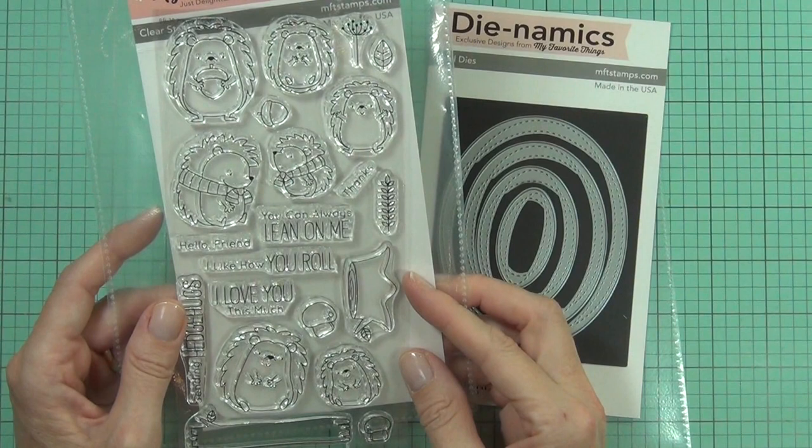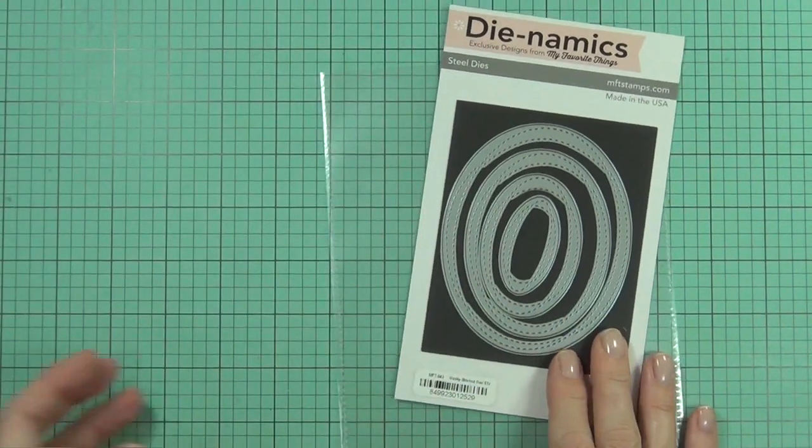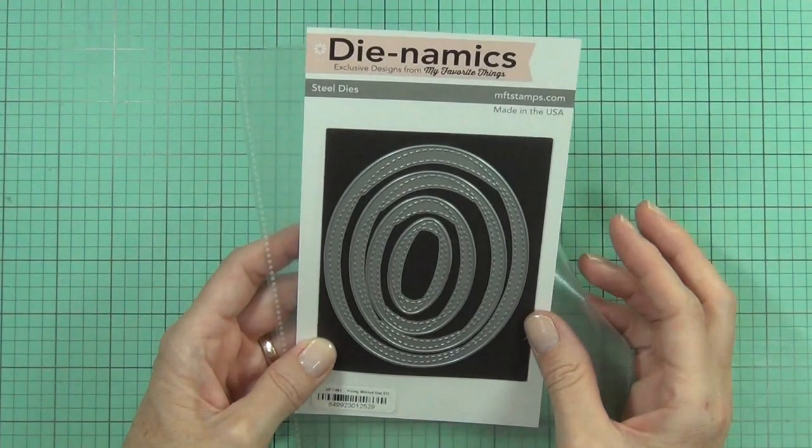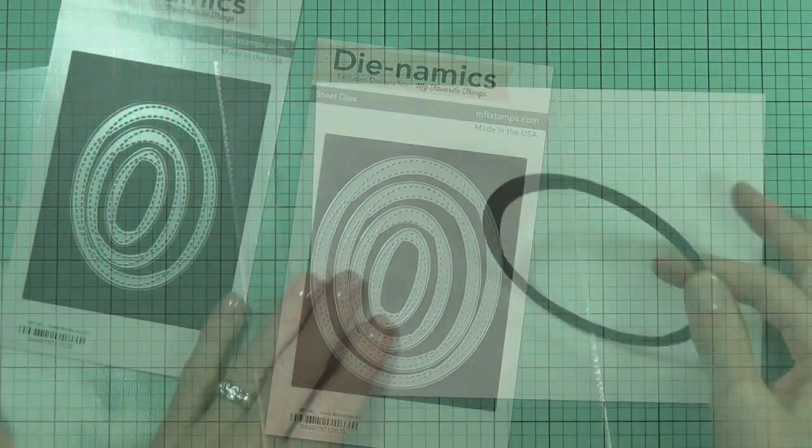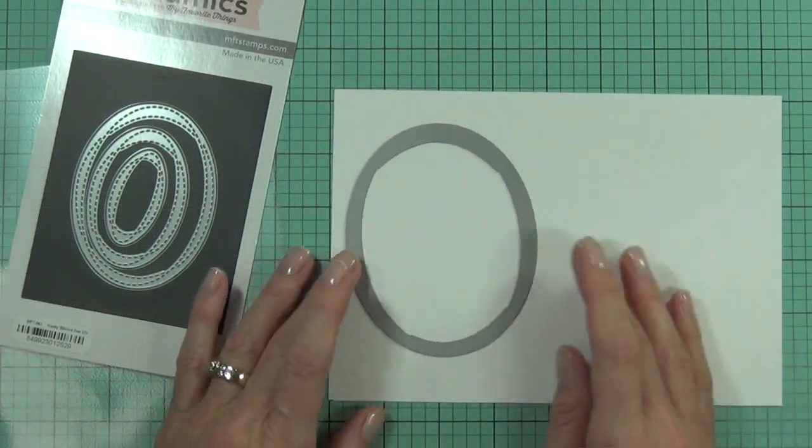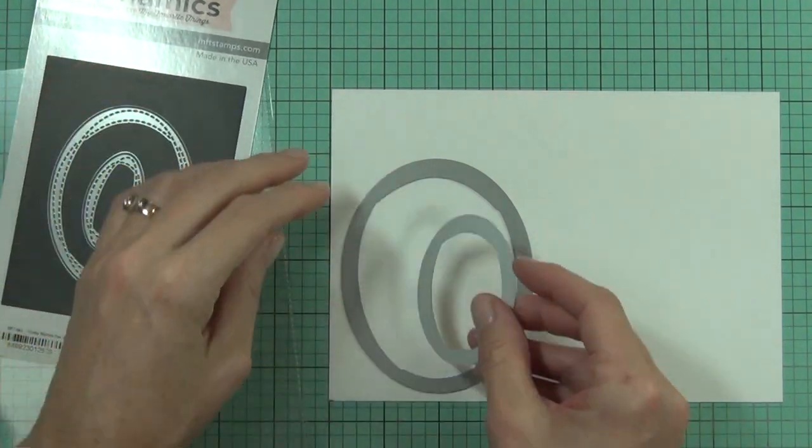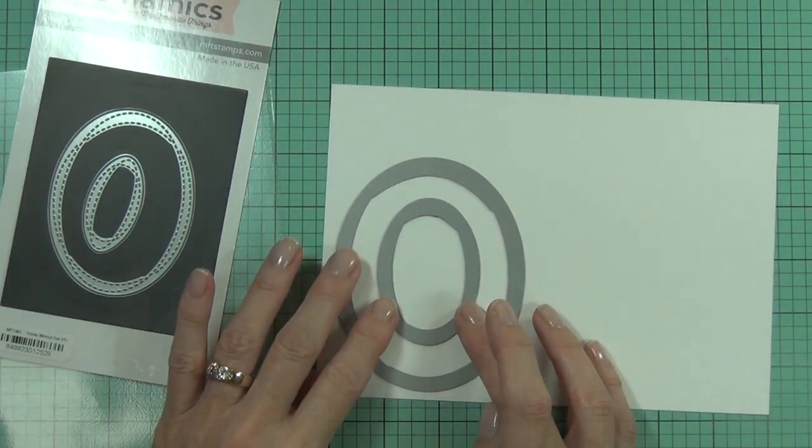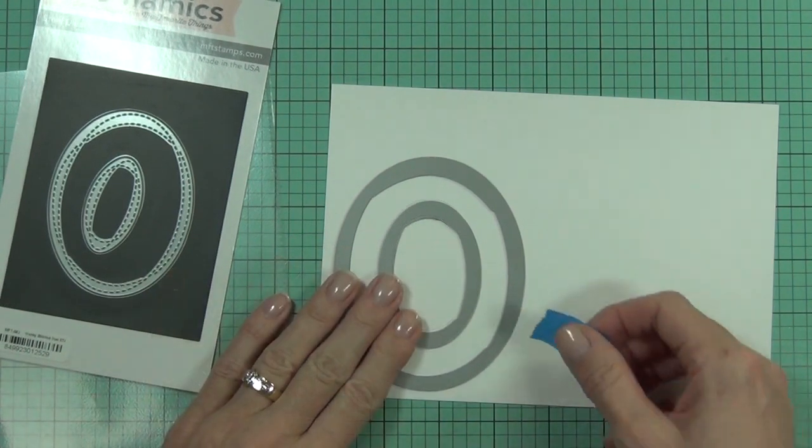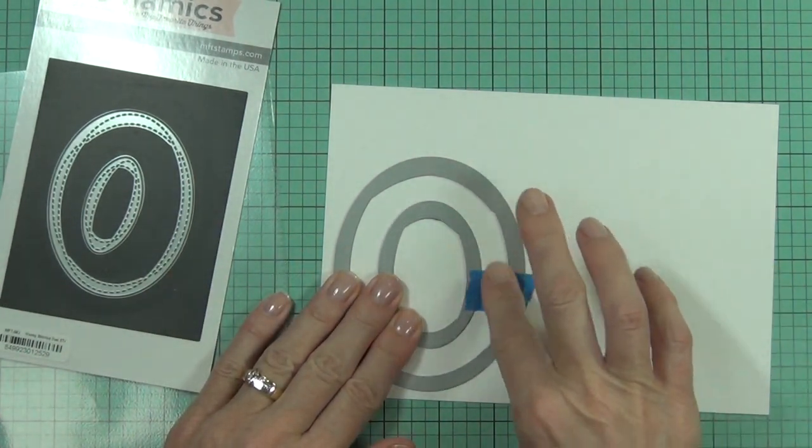This is the Happy Hedgehog set and it is so cute. I've gone for another wonky stitch dynamics set and this is the ovals. I like the rectangles that I've got - I just use them all the time - and I do really like oval elements on a card, so I thought this would be perfect for my stash.